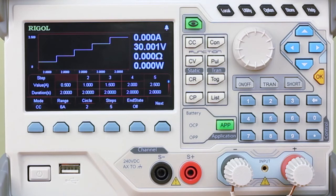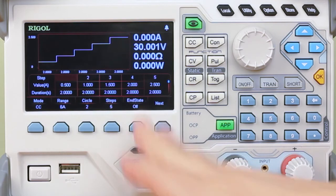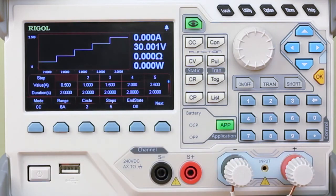The fourth mode in the transient modes is a list. Here we have set a list from half an amp up to two and a half amps, a stair step of current.